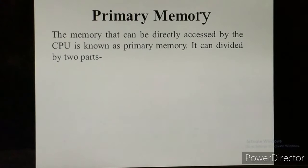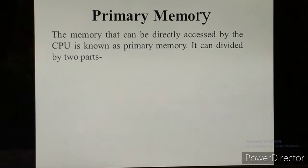Primary memory is used to store the data and programs running in the computer. When your program is run, it is stored in the primary memory. When you are working on any application, at that time you are working on primary memory. Primary memory is also divided into two parts: RAM and ROM.